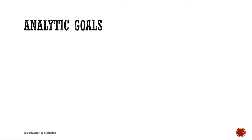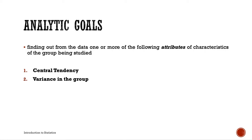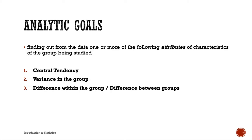We have what we call analytic goals. Analytic goals are directed towards finding out from the data one or more of the following attributes or characteristics of the group being studied. We have five types: central tendency, variance in the group, difference within or between groups, relationships within the group, and prediction.